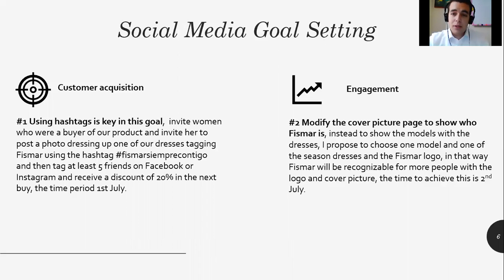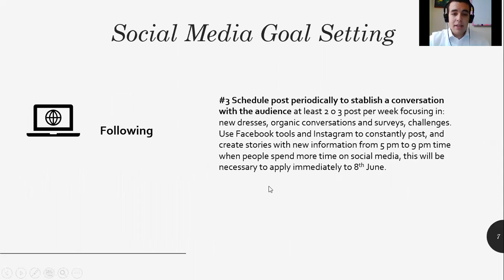For engagement, we were working with branding. We decided to start working with the cover page and the profile page — the cover picture and the profile picture — because Fismar is a good company and a good business, but it's not very recognizable. So to make it recognizable, we decided to modify the cover picture. For the following goal, we decided to schedule posts periodically to establish a conversation with the audience, at least two or three posts per week focusing on new dresses, organic conversations, and surveys and challenges. In that way we were working with three different engagement strategies.